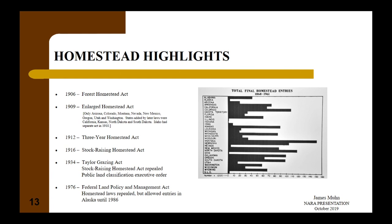In the early 1900s, there were a number of new Homestead Acts. In 1906, the Forest Homestead Act allowed entries within national forests. In 1909, the Enlarged Homestead Act gave up to 320 acres to a settler. In 1912, the three-year Homestead Act reduced the five-year proving-up period to three years. In 1916, the Stock Raising Homestead Act gave 640 acres to a settler. In 1976, the Federal Land Policy and Management Act repealed the homestead laws.